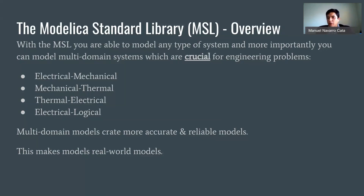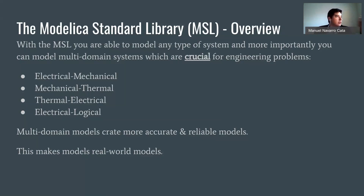Some examples of multi-domain modeling would be electrical and mechanical components, mechanical and thermal, thermal and electrical, and electrical and logical. Multi-domain models really create more reliable models — real-world models. Things that you see in the real world you're able to put on the computer and vice versa. The point of modeling is to make it as close to real life as possible, and this puts us a step closer to that.